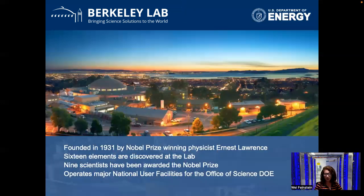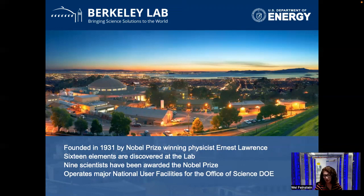I'll start with a few highlights of the lab. Located in the Berkeley Hills, above the University of California Berkeley campus, the lab was founded by Ernest Lawrence. He was a Nobel Prize-winning physicist who invented the cyclotron and also discovered the element called Lawrencium, one of the 16 elements discovered at the Berkeley Lab. There are also nine Berkeley scientists who have been awarded the Nobel Prize. The lab also operates a number of major national user facilities, including the Advanced Light Source, Joint Genome Institute, and the SNET.